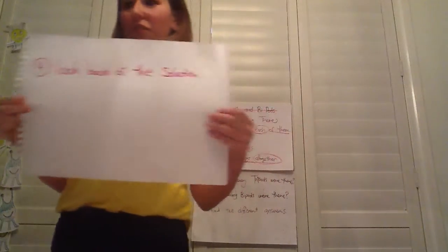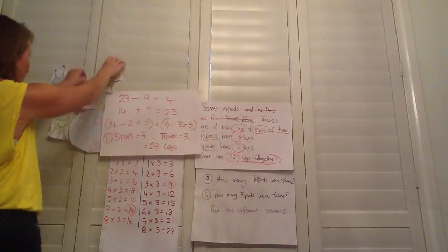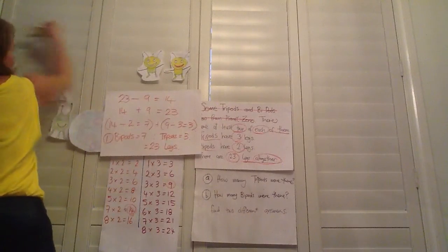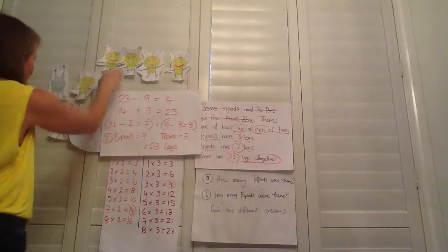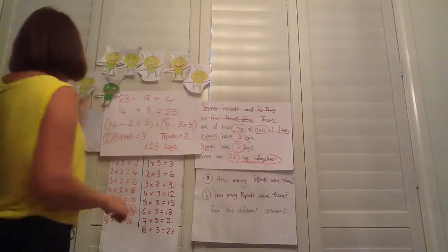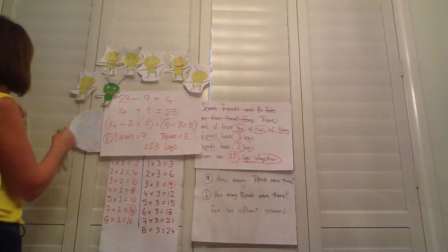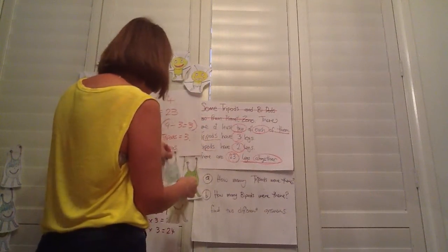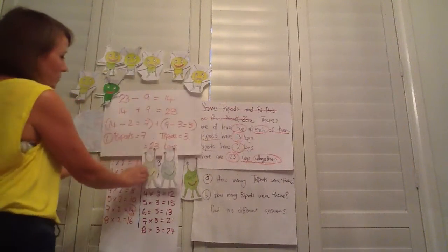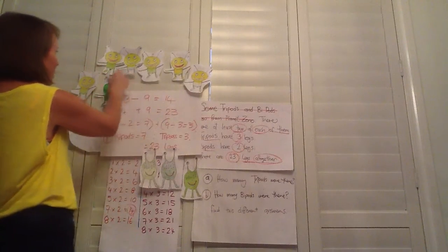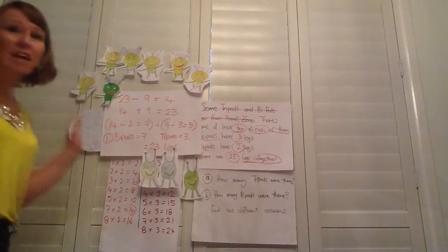We need to check that out and look back at the solution. We need seven bipods — one, two, three, four, five, six, seven — and three tripods — one, two, three. We know that three times three equals nine, so we count on from nine: 10, 11, 12, 13, 14, 15, 16, 17, 18, 19, 20, 21, 22, 23. And we made 23 legs.